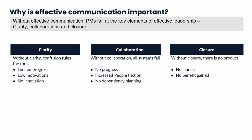If you look at clarity, low clarity means confusion throughout the ranks, limited progress, and low motivation. In short, there's not going to be any innovation in such a climate. Low collaboration means all systems failure — there's no progress if people don't work together. And closure means the final output, the deliverable.